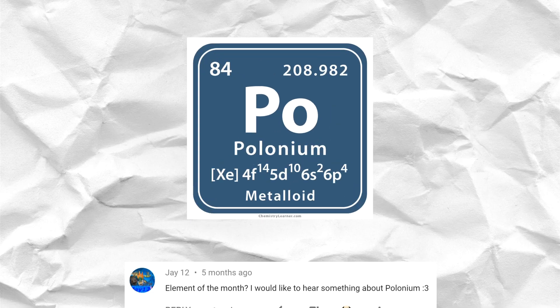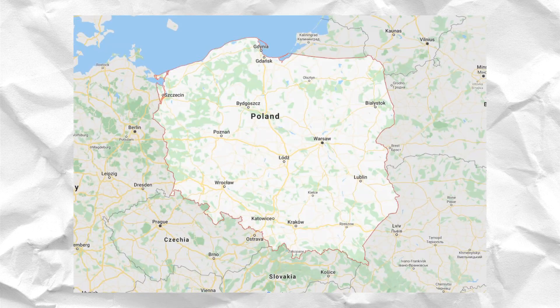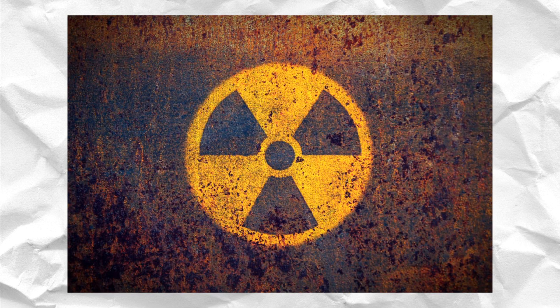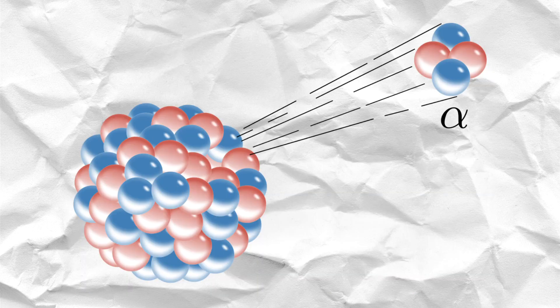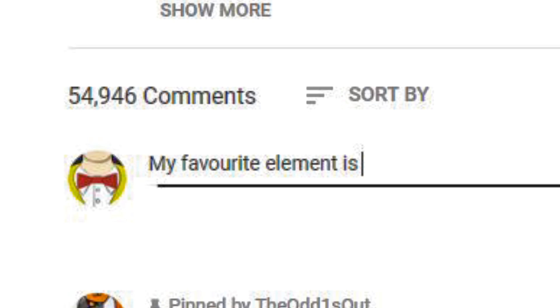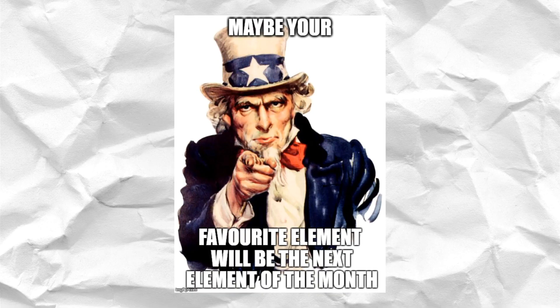And the element of the month is Polonium. Polonium is the 84th element on the periodic table. Named after Marie Curie's homeland of Poland, Polonium is very radioactive, has no stable isotopes, and is mostly used to extract alpha particles and neutrons for scientists to use in experiments. Don't forget to vote for your favorite element in the No Longer Monthly Element Contest down in the comments section. Who knows, maybe your favorite element will be the next element of the month.